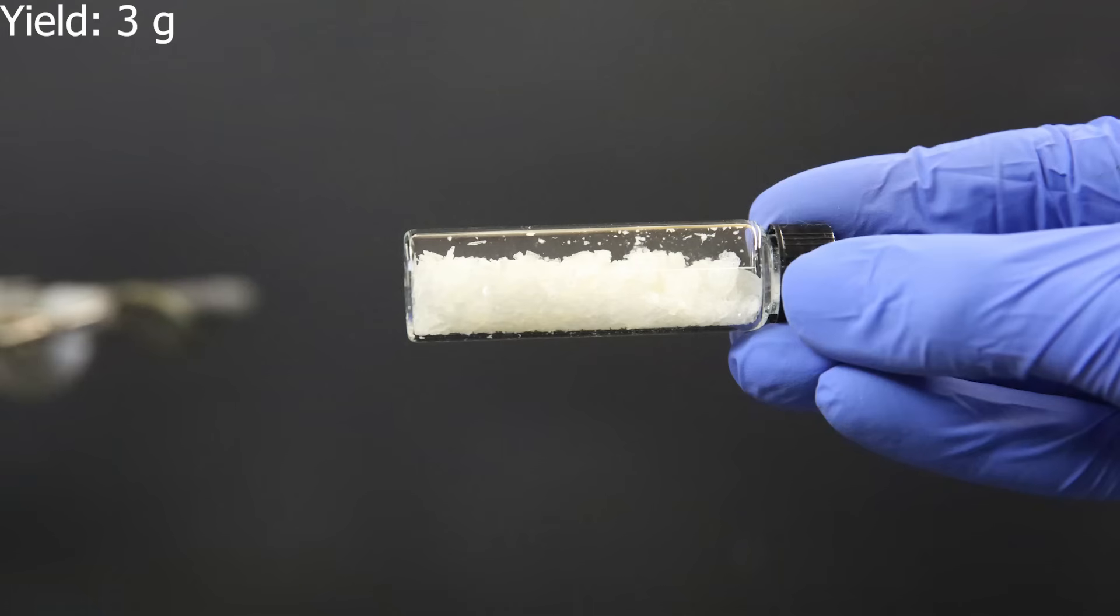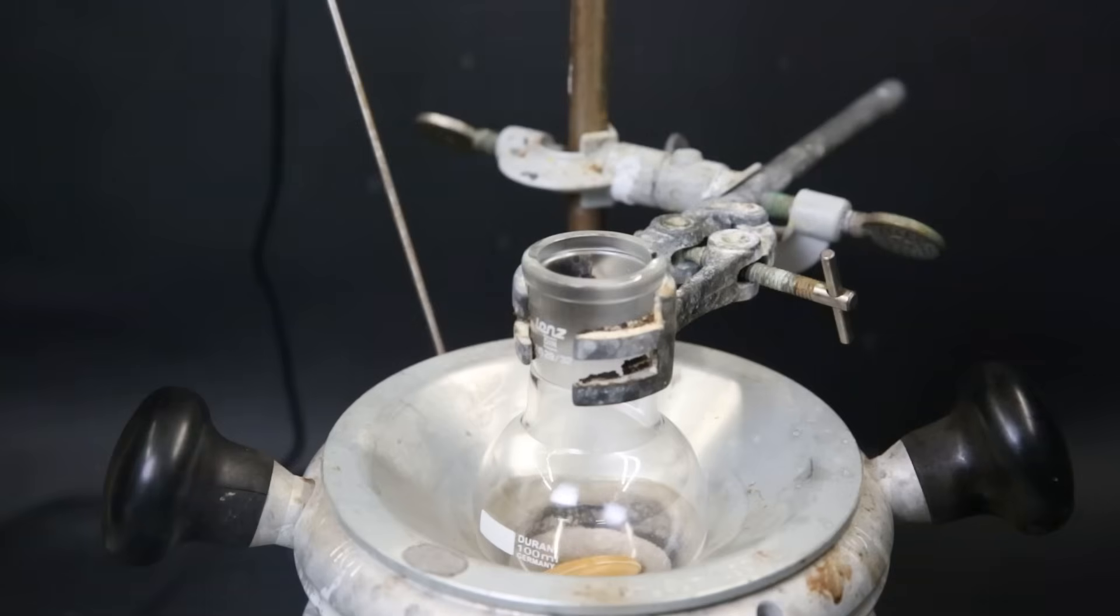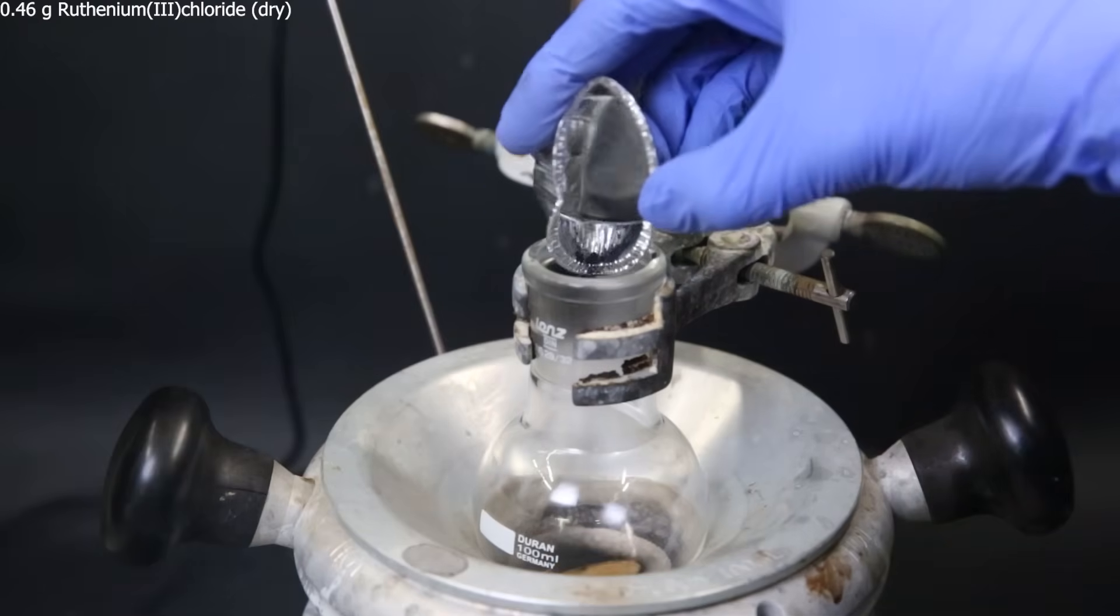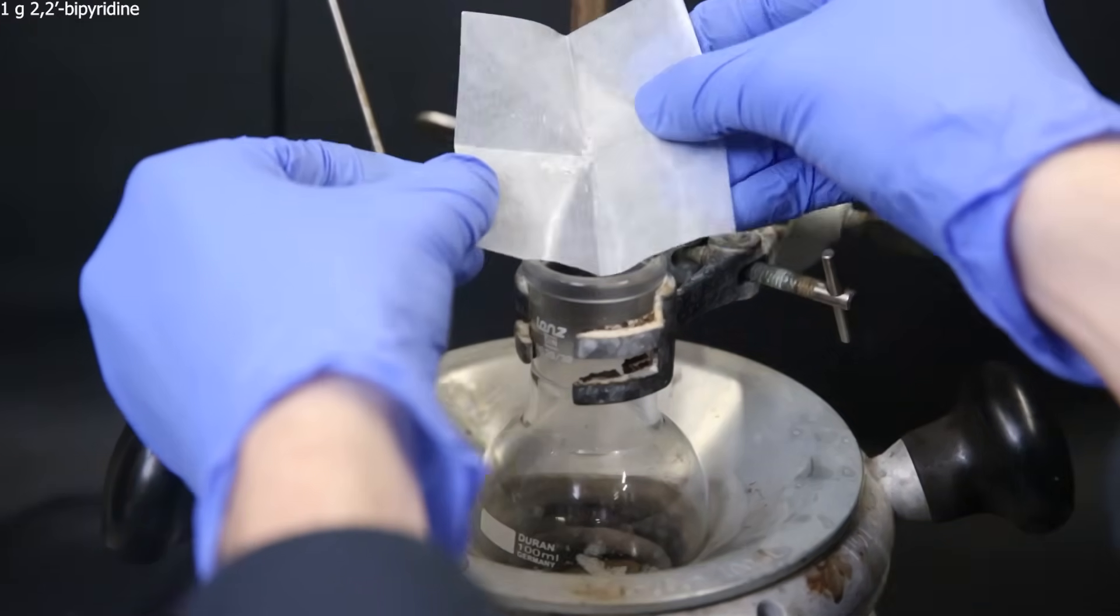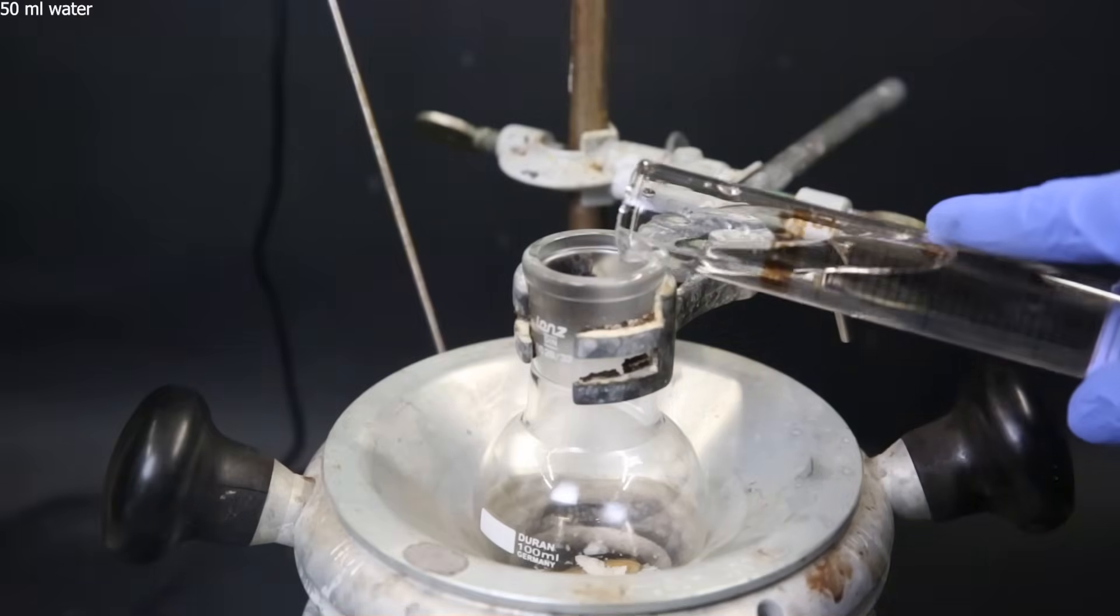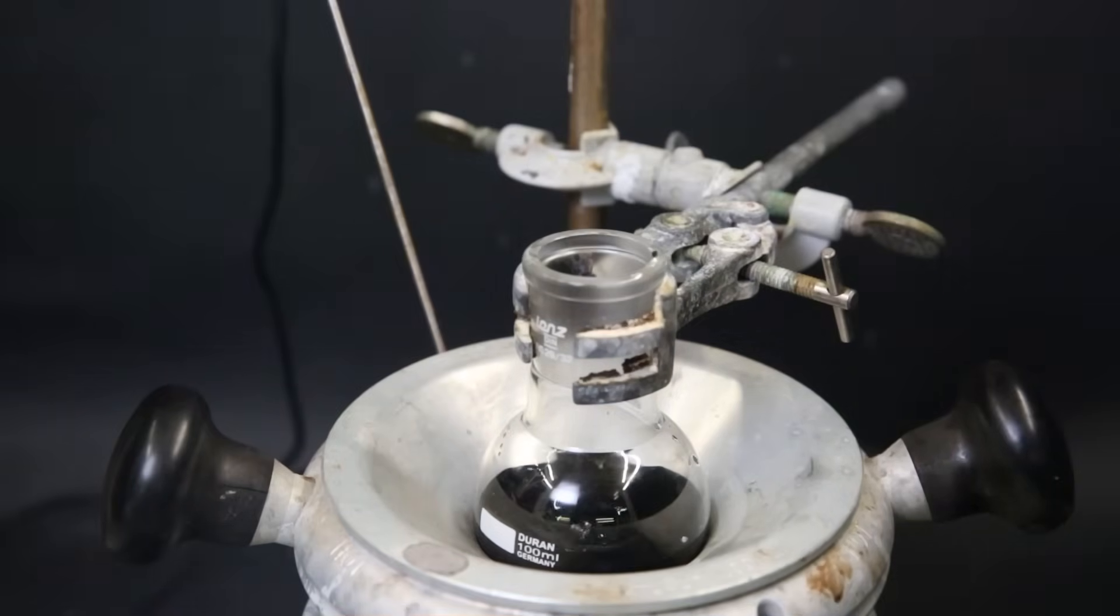Now to make the ruthenium complex of bipyridine, I set up a heating block with a flask and a stir bar. I add in 0.46 g of dry ruthenium 3 chloride. Then I add 1 g of bipyridine crystals and then dissolve it in 50 ml of water. Now I will prepare a solution of sodium phosphonate, which will reduce the ruthenium 3+ ions to 2+, and allow it to form the 2+ complex with the bipyridine.